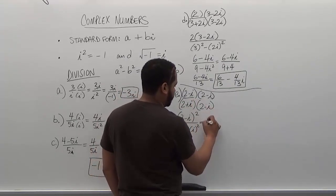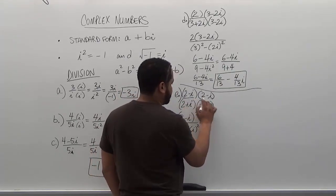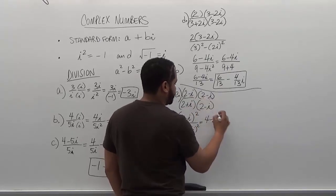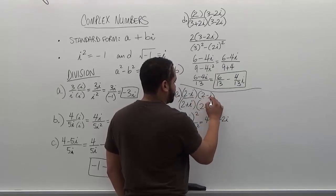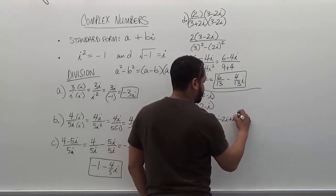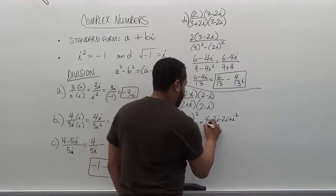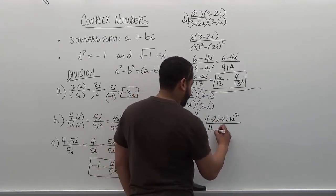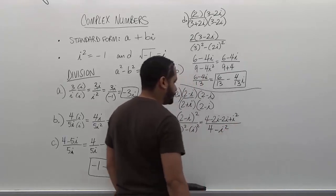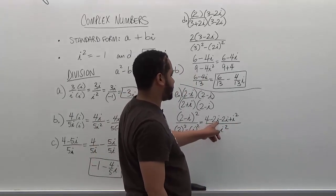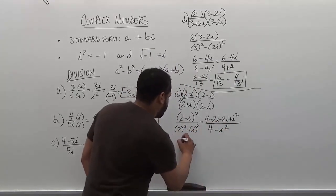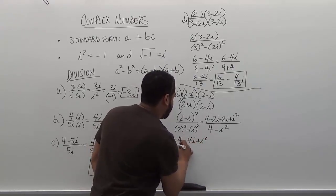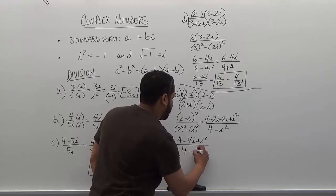Two times two is four. Two times negative i is negative 2i. Negative i times two is negative 2i. And negative i times negative i is positive i². On the bottom we have four minus i². Combining like terms on the numerator, we have four minus 4i plus i².